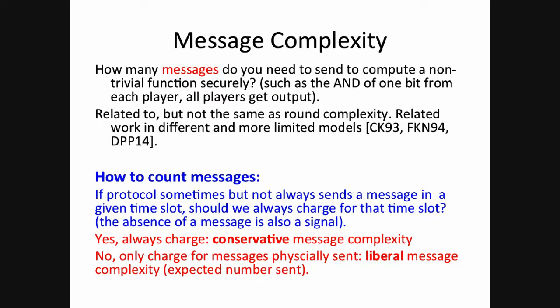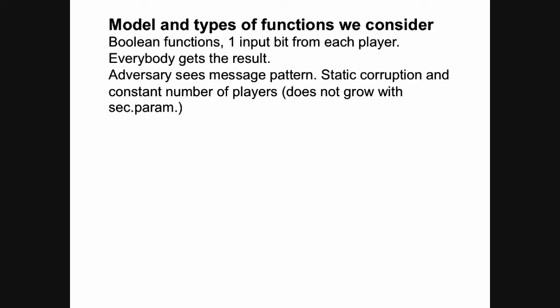A little more about the security model and types of functions. We consider Boolean functions with one input bit from each player, and everybody gets the result. The adversary sees the message pattern — so when A sends to B, even if both are honest, the adversary knows a message was sent but not its content. We assume static corruption of a constant number of players, ruling out tricks like selecting a small random committee. We can also consider adaptive corruption with the same bounds.